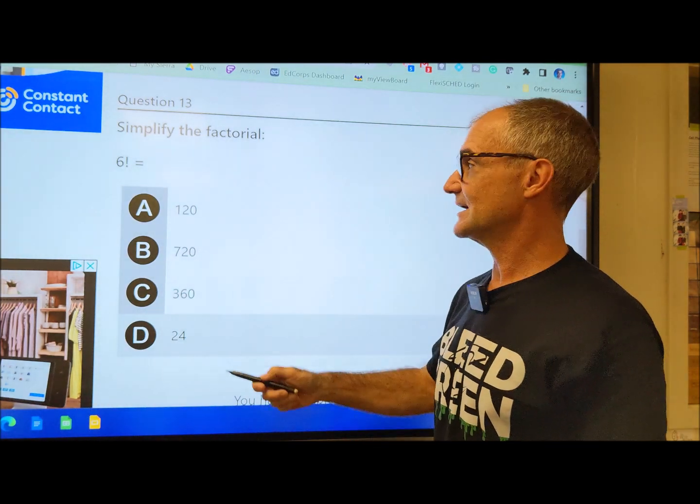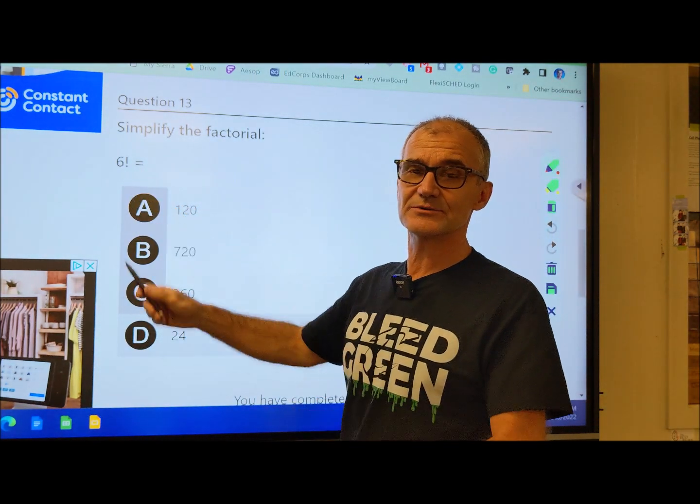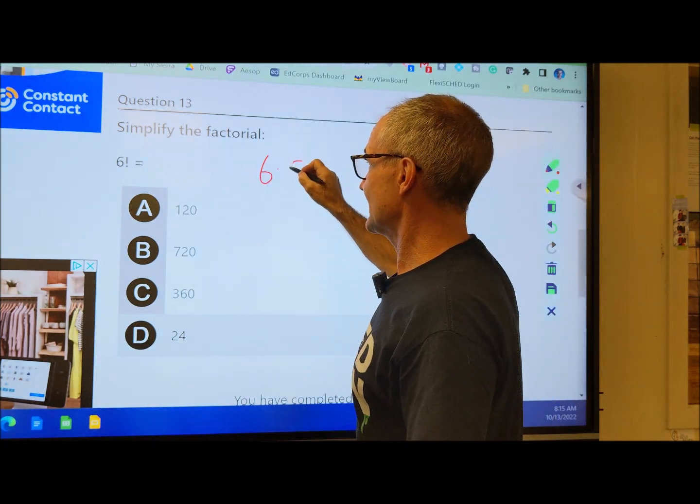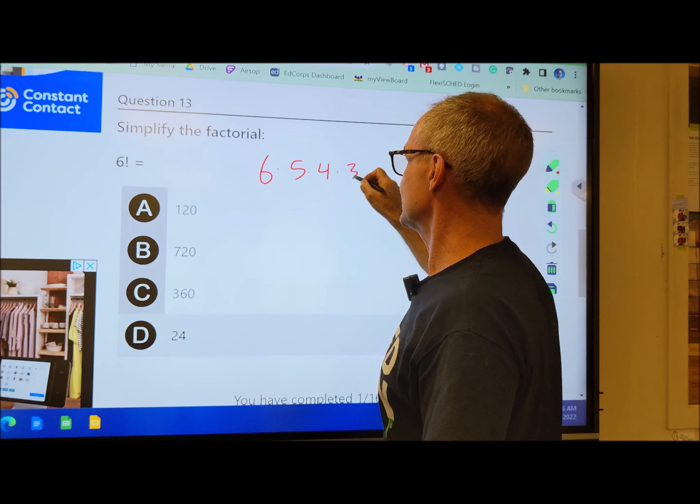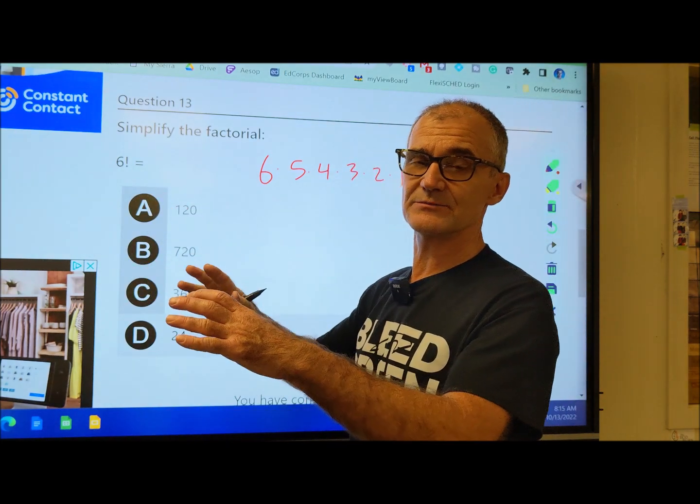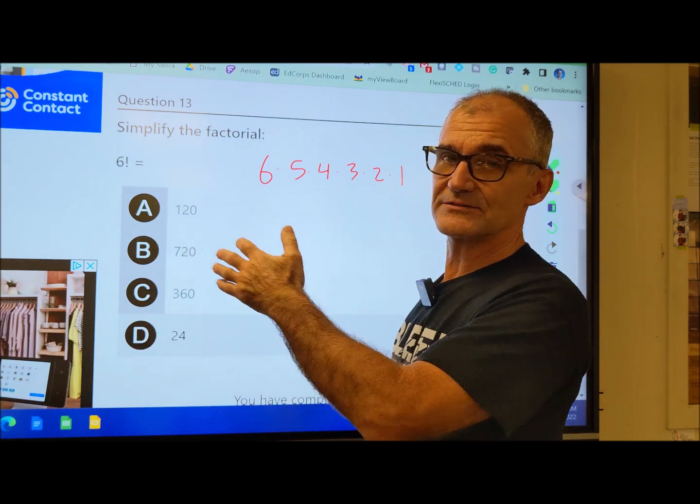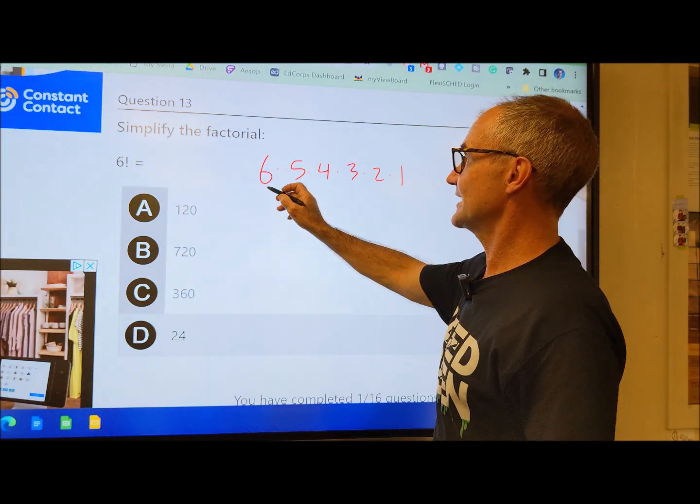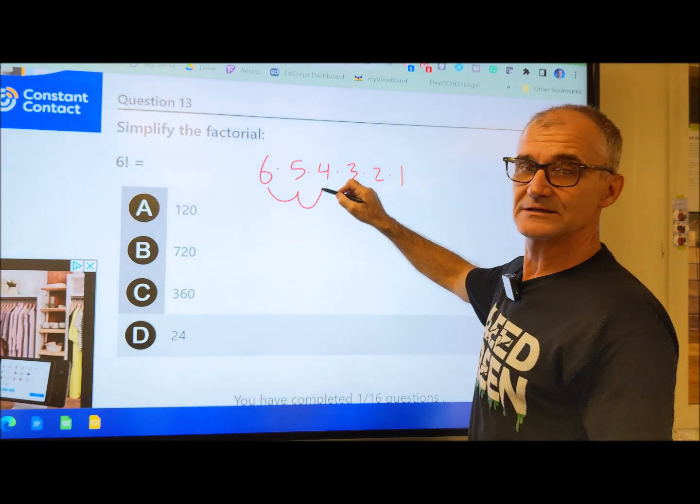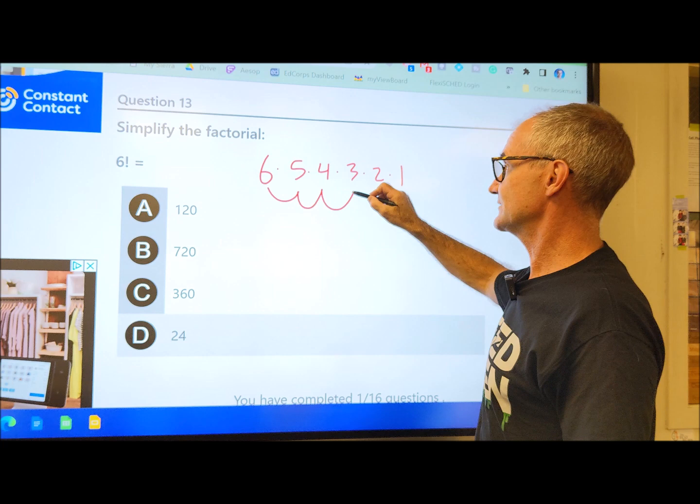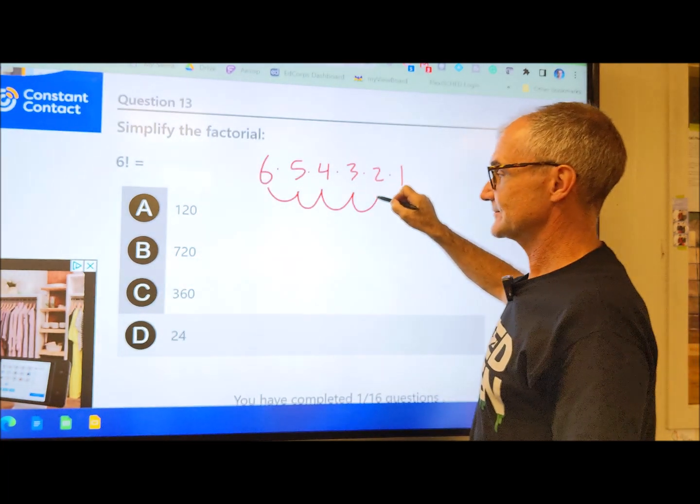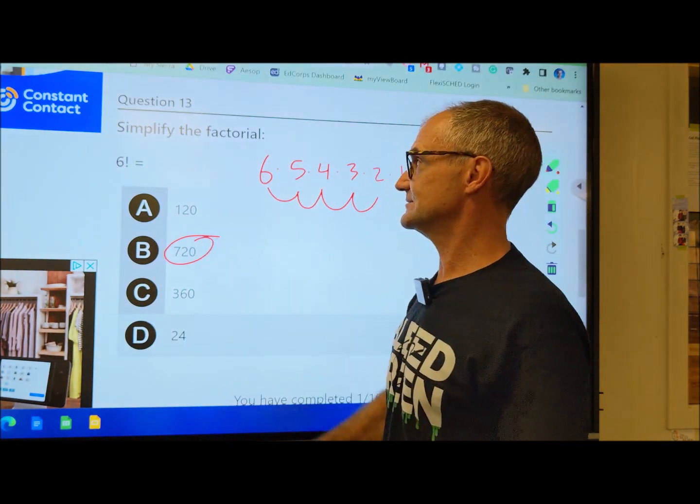Number 13, the reason it's a mathematical knowledge, you just need to know what that exclamation point is. That doesn't mean 6 with emphasis. It means 6 times 5 times 4 times 3 times 2 times 1. I think it's called a factorial. Whatever the number is, you multiply one less all the way down. So 6 times 5 is 30, 30 times 4 is 120, 120 times 3 is 360, 360 times 2 is 720. And there's my correct answer, answer B.